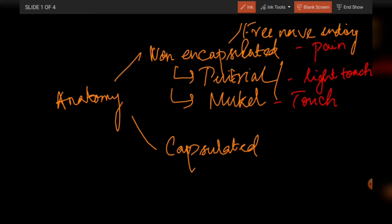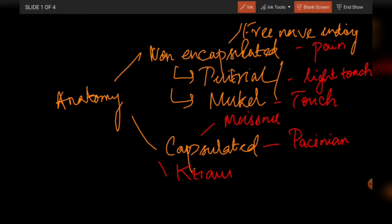The encapsulated receptors include Meissner's corpuscle, Pacinian corpuscle, end-bulbs of Krause, and Ruffini endings.